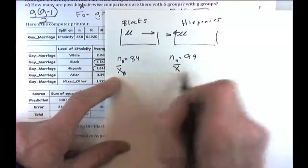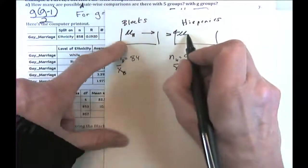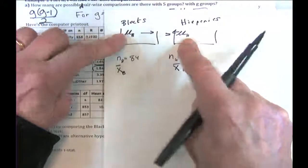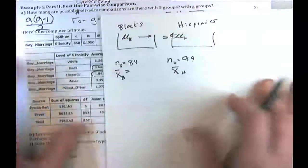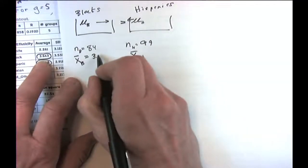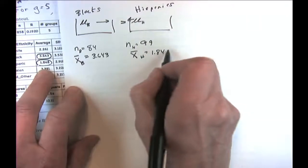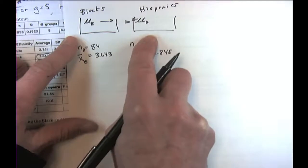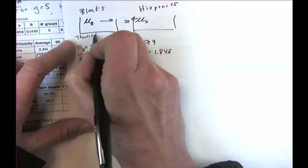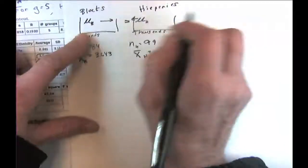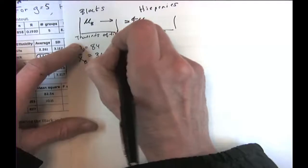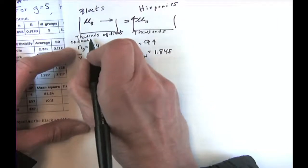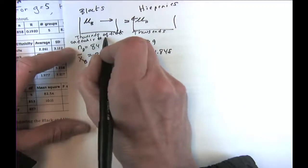Normally we'd compute the standard error for the Black group mean as 3.538 over root 84, and the Hispanic standard error as 2.918 over root 99. But instead, we're going to use a pooled estimate of the standard deviation — assuming equal variance within all groups, which is called homoscedasticity.